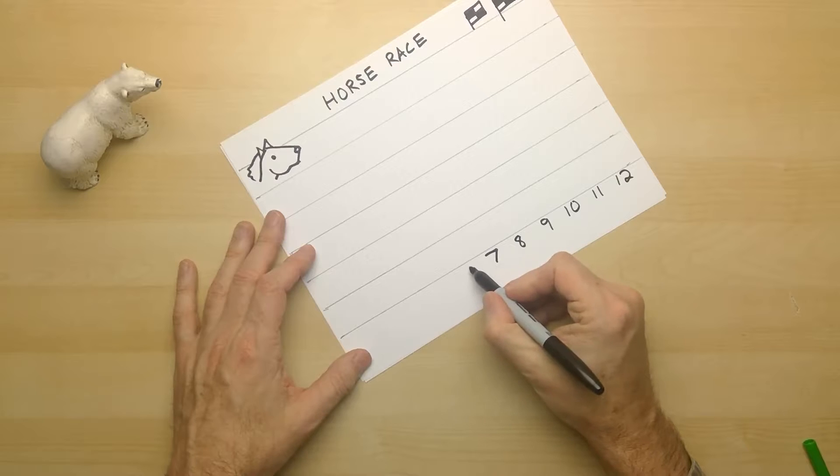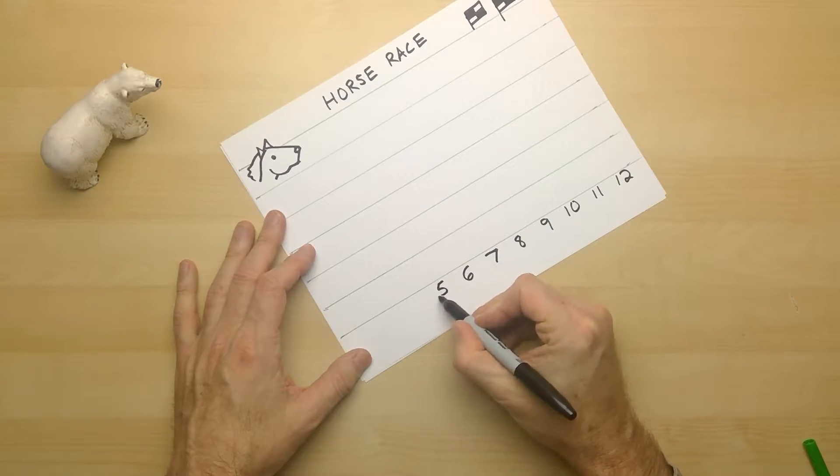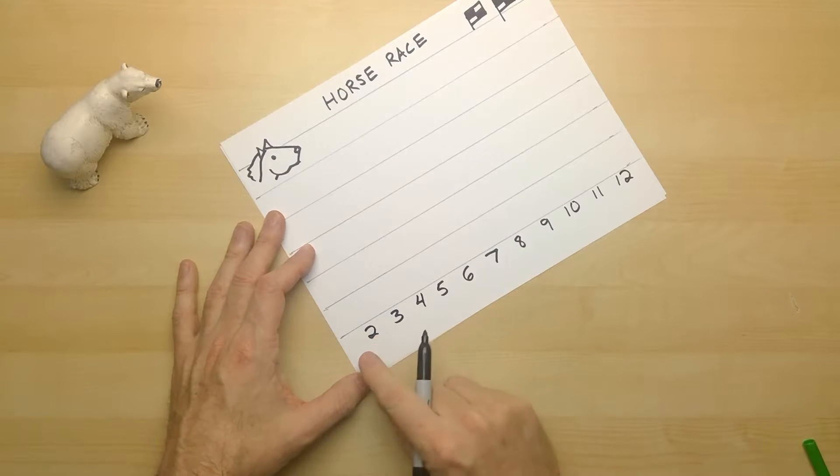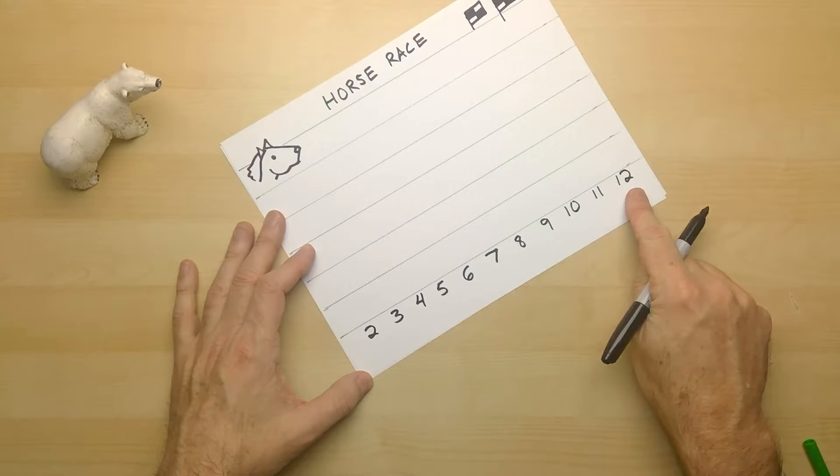And counting down. Six, five, four, three, two. Not enough room for a one. But actually, we don't need a one. We only care about the numbers two through twelve. That's all we need.